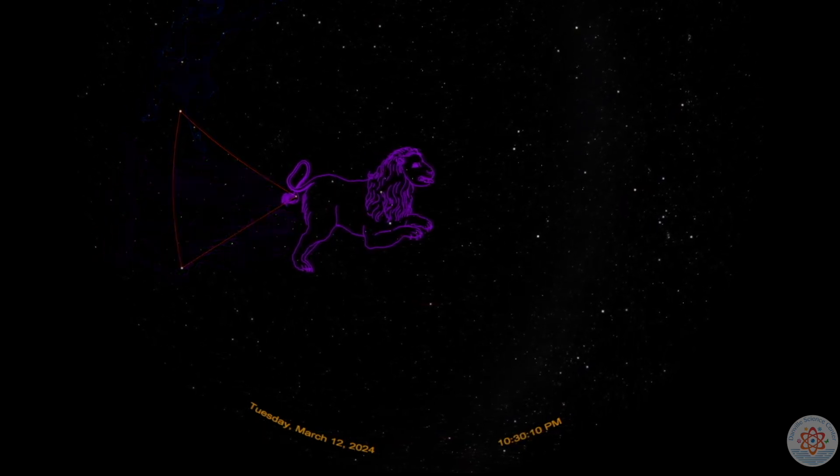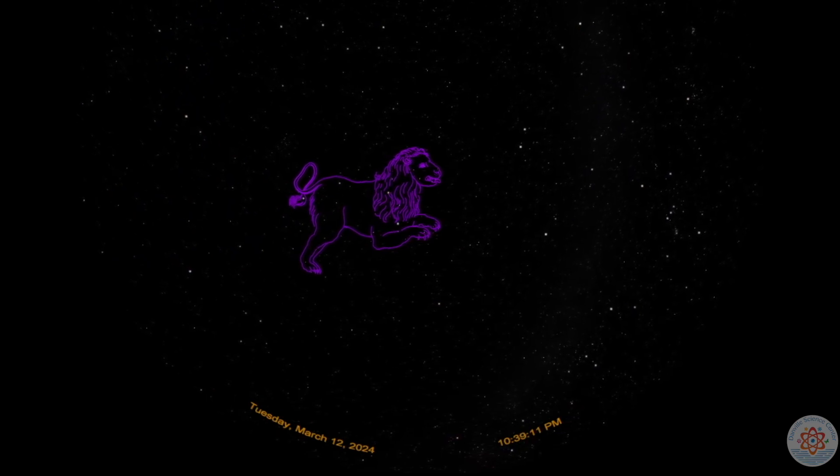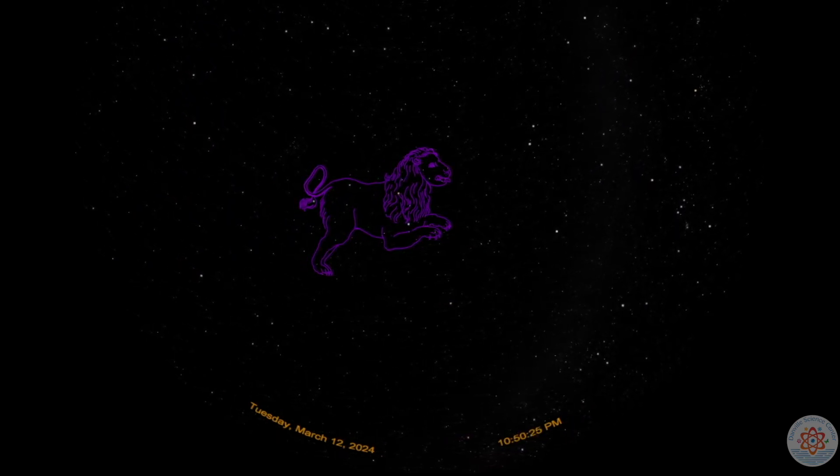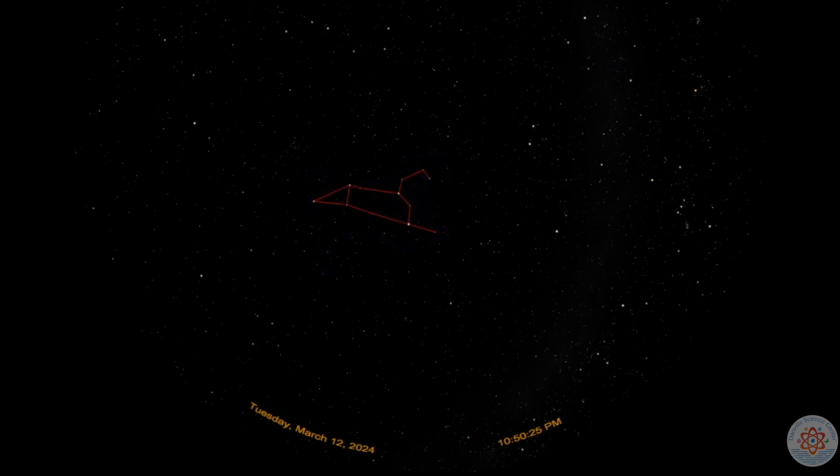Leo is one of the 88 officially recognized constellations that actually resembles its namesake. The stars of Leo line up to resemble a large cat seated on all four legs. It may have been the inspiration for the Great Sphinx of Giza.